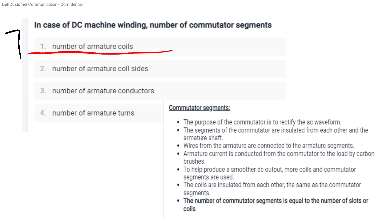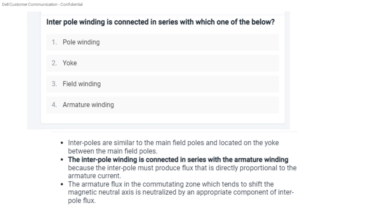We have to rectify AC waveforms. Interpole winding is connected in series. Pole winding is equal to field winding. Interpole winding is always connected in series with the armature winding.